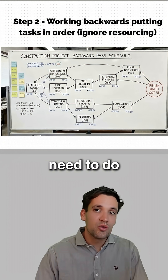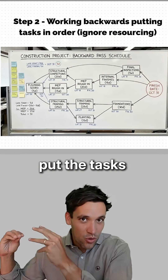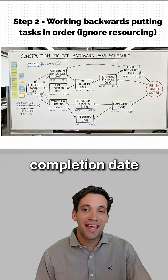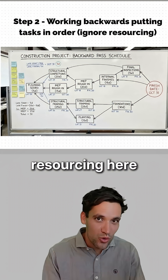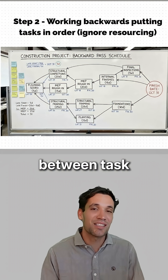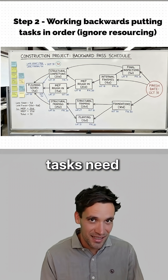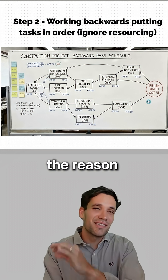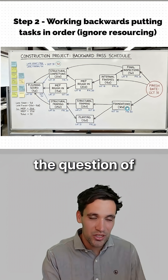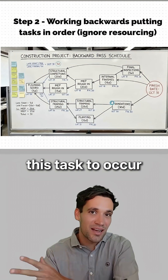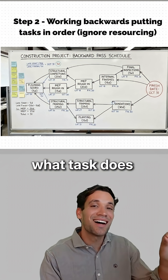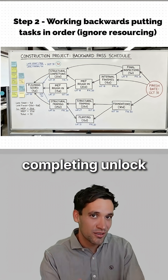Once you've worked out all the work you need to do, put the tasks in order working backwards from the completion date. Critically, ignore resourcing here — just look at the mandatory dependencies between tasks. What is the actual sequence tasks need to happen in? The reason I start from the end and work backwards is because it's much easier to answer the question of what needs to happen for this task to occur, rather than asking what does this task completing unlock?